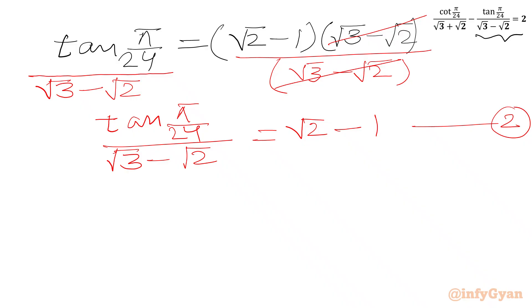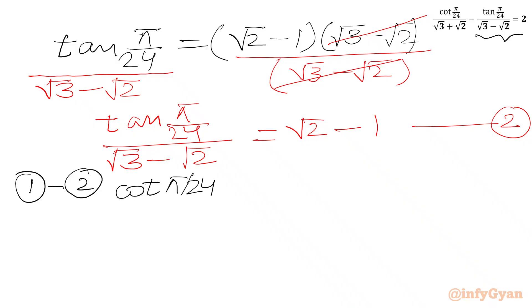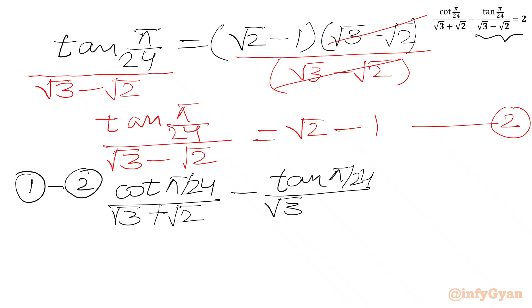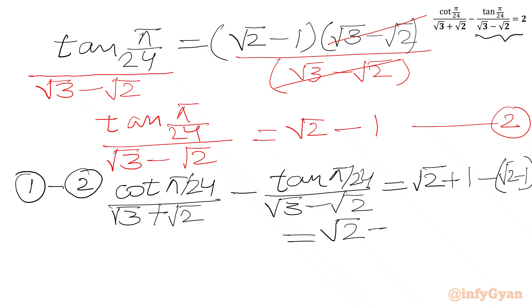Now we subtract equation 2 from equation 1. We get cot(π/24)/(√3 + √2) minus tan(π/24)/(√3 - √2) equals (√2 + 1) minus (√2 - 1). Simplifying the right-hand side: √2 + 1 - √2 + 1. The √2 terms cancel and we get 2. Hence proved.